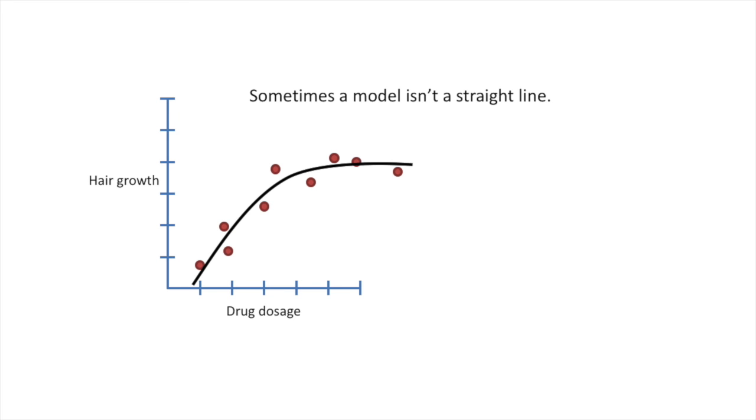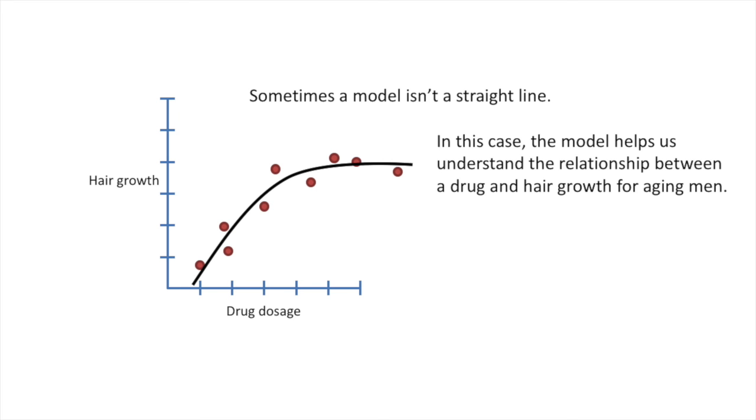Sometimes a model isn't a straight line. In this case, the model helps us understand the relationship between a drug and hair growth for aging men. We see that after a point, increasing the dosage doesn't help grow any more hair.